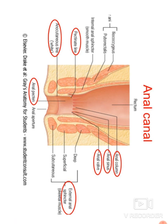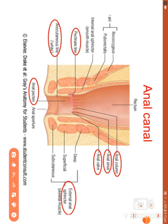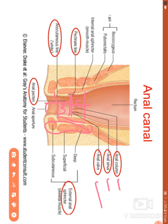In summary, this section covered the relations, interior, musculature, blood supply, nerve supply, lymphatic drainage, and hemorrhoids of the anal canal. Key points include the pectinate line and the Hilton's line, the internal and external anal sphincters, the three interior zones, and the pectinate line acting as a watershed line where structures above and below differ by embryological origin.